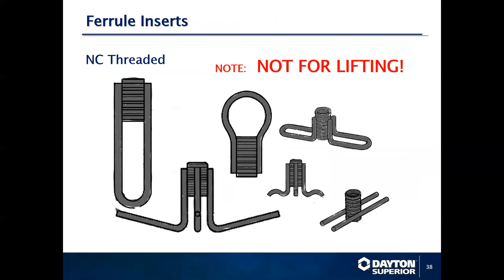Ferrule inserts — to be clear, you do not want to lift concrete product with a ferrule insert. Because of the thread capacities of an NC threaded bolt, you do not want to pick up a piece of concrete with that insert. These inserts are predominantly made for permanent anchorage: signs, shelf brackets, and those types of things.